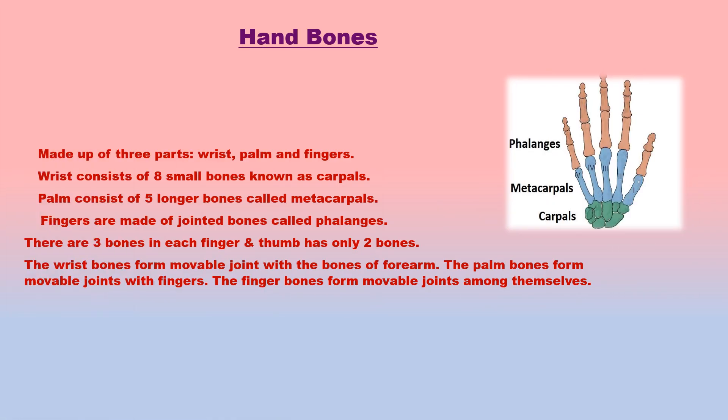Our hand is made up of three parts: wrist, palm and fingers. The wrist consists of eight small bones known as carpels. The palm is composed of five longer bones called metacarpals. The fingers, including the thumb, are made of jointed bones called phalanges — three phalanges in each finger but the thumb has only two. The wrist bones form movable joints with the forearm bones, making the wrist flexible. There are five fingers in our hand including the thumb, which is shorter than the others.